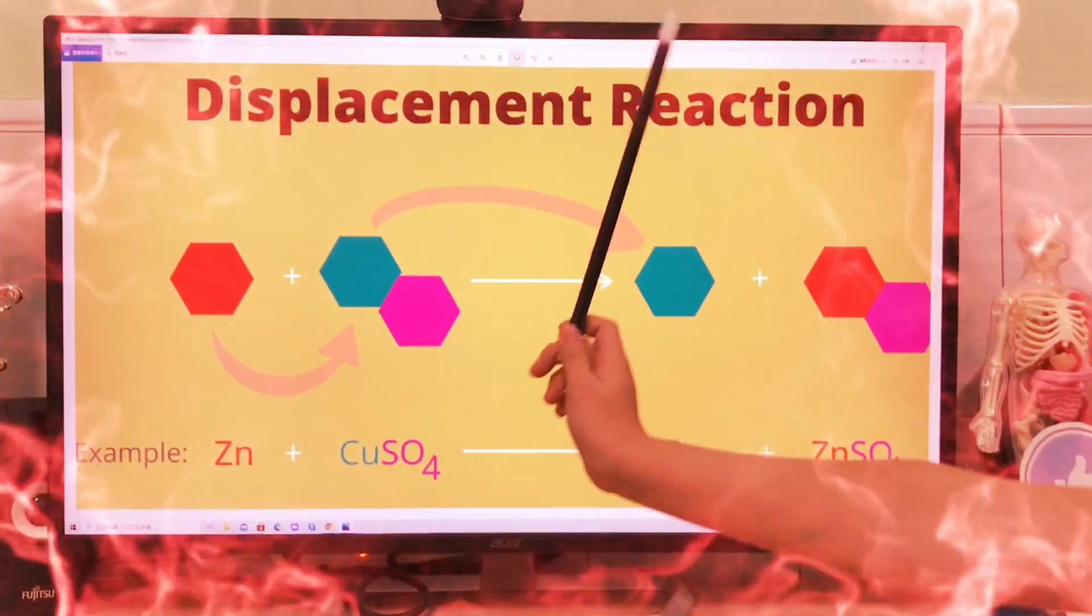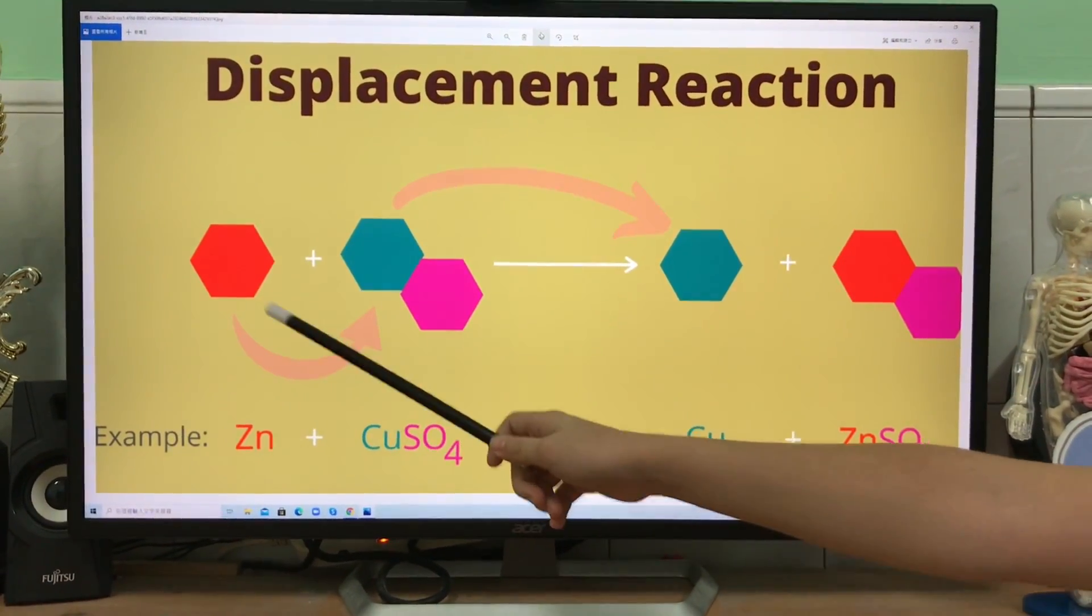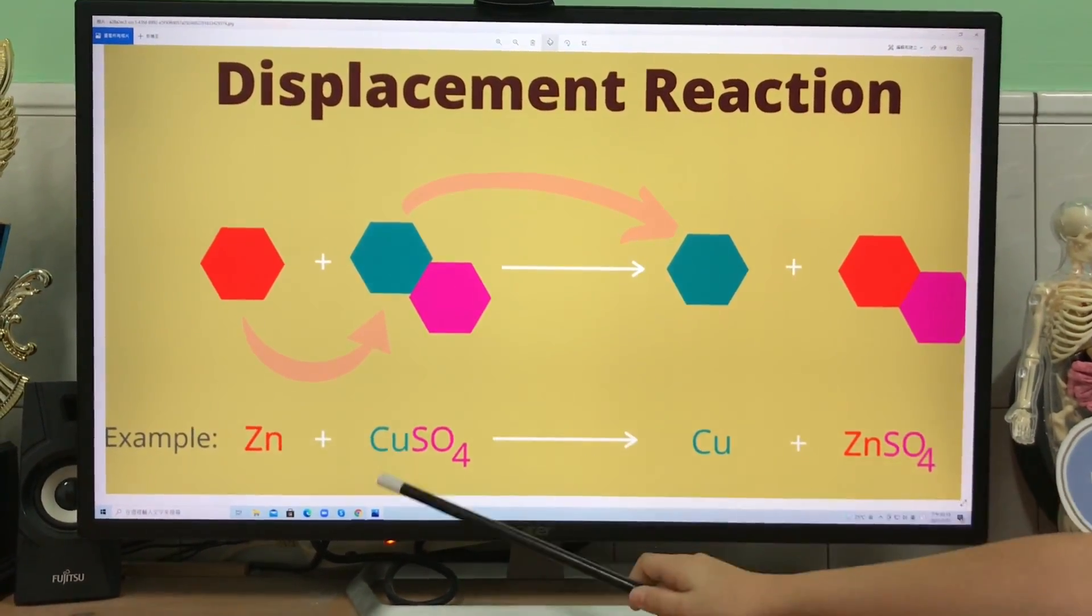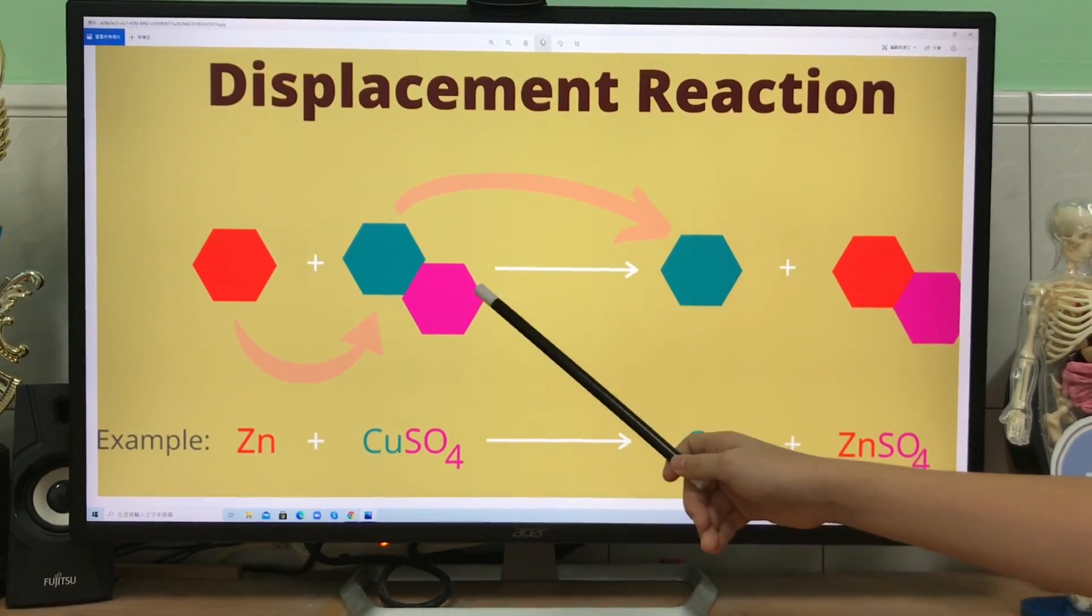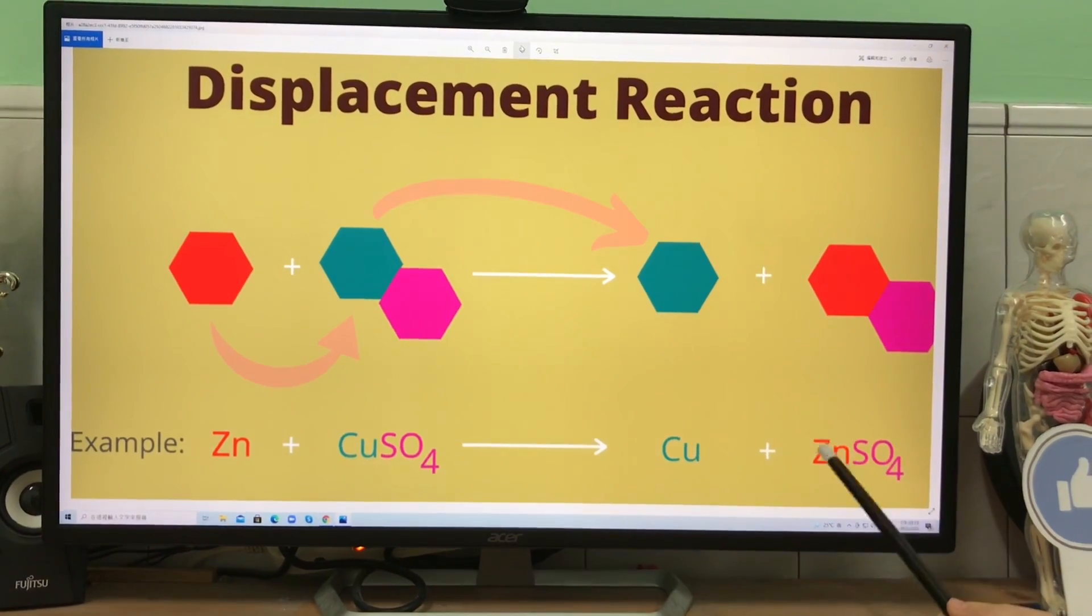And this reaction is called displacement reaction. This is the displacement reaction. So first this is the zinc. Zinc plus copper sulfate.